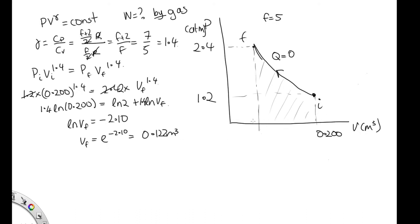Let's just check it's reasonable. This is a compression, so it should be smaller than this one. So 0.122 meters cubed looks very reasonable on that plot there.